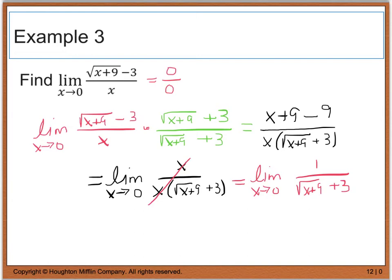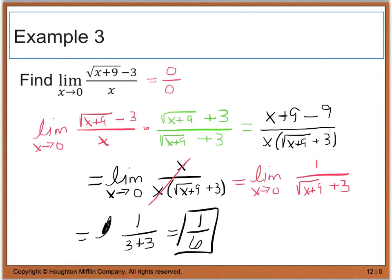I can't simplify this anymore, so now I'm going to go ahead and try direct substitution. When I do that, we end up with 1 divided by 0 plus 9, which gives me 9. The square root of 9 is 3, plus 3, so this gives me 1 sixth as the limit.